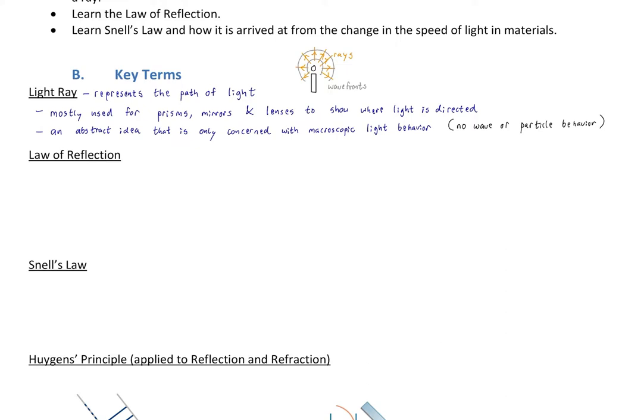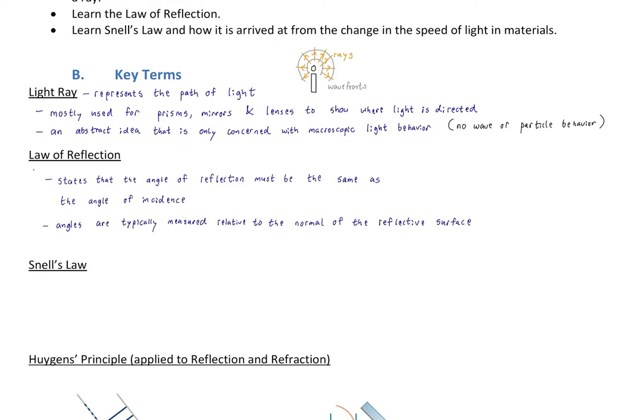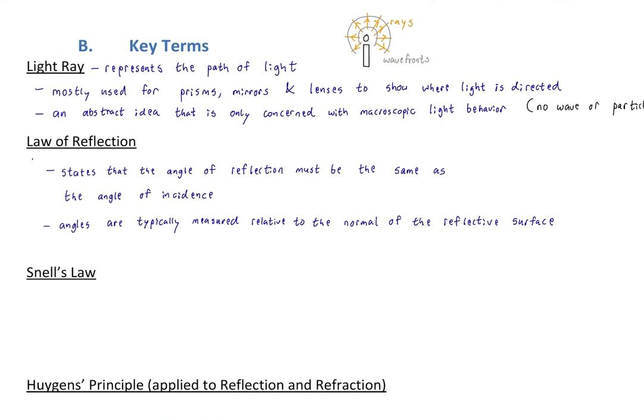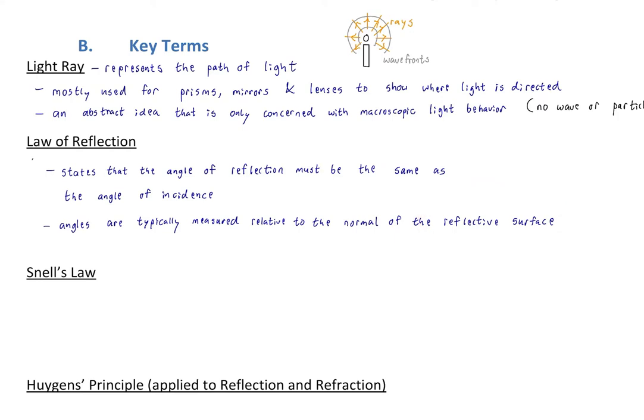Now let's look at the first of our two laws: the law of reflection. The law of reflection states that the angle of reflection must be the same as the angle of incidence — so we have two equal angles. If something comes in at a certain angle, it gets bounced back at the same angle. These angles are typically measured relative to the normal of the reflected surface, the normal direction being perpendicular to the surface.